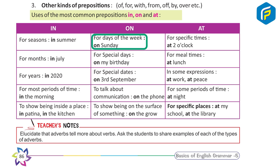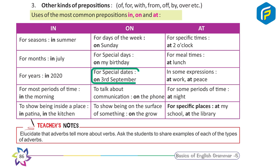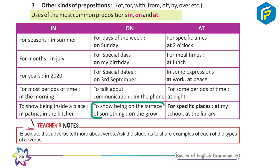'On' is used for days of the week (on Sunday), for special days (on my birthday), for special dates (on 3rd September), to talk about communication (on the phone), and to show being on the surface of something (on the grove).